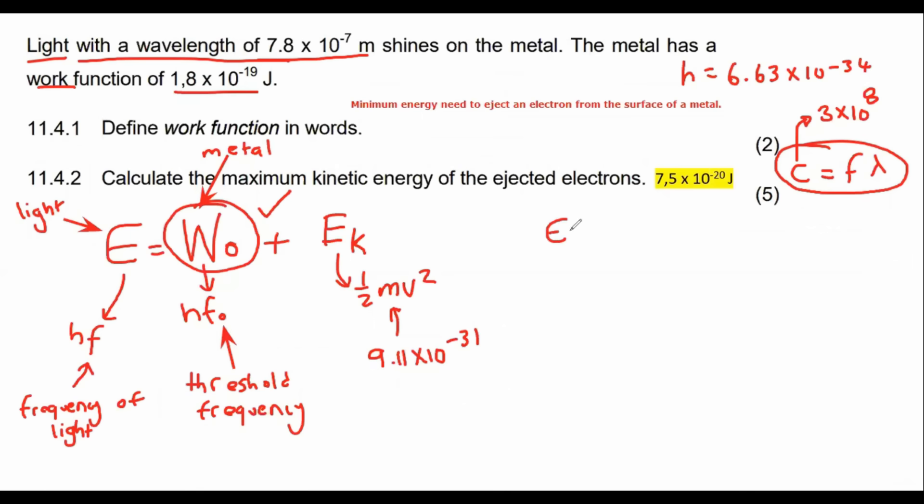So we're going to say E is equal to W zero plus Eₖ. Now to get E, we would normally say HF, that's what I said over here. However, we don't have the frequency of the light, but we can get it by using this formula over here first.